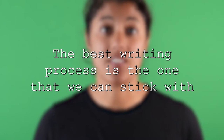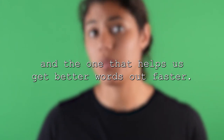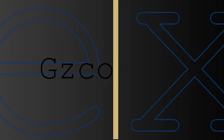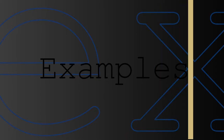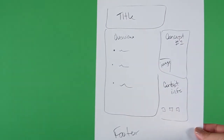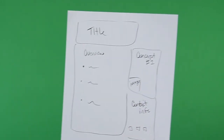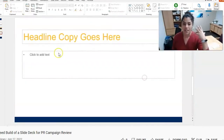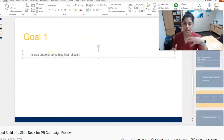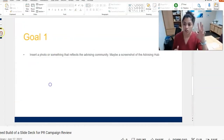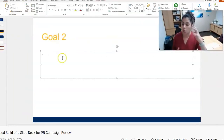The best writing process is the one that we can stick with and the one that helps us get better words out faster. My writing process flows through those five steps like this. First, I turn a blank page into a loose sketch or idea. If it is more of an infographic, I like to sketch it on a page before starting in InDesign, Canva, PowerPoint, or whatever. If it's a paper, I write the audience statement and my big action summary just to have something on the page staring back at me.